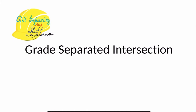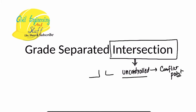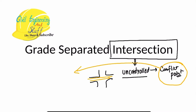In the previous lecture series we discussed about intersections and how an uncontrolled intersection creates lots of conflict points — conflict points being the accidental hotspots. To mitigate these conflict points, the most economical way is to convert the intersection into one-way. However, this also reduces the traffic capacity, so it is not desirable in all scenarios.